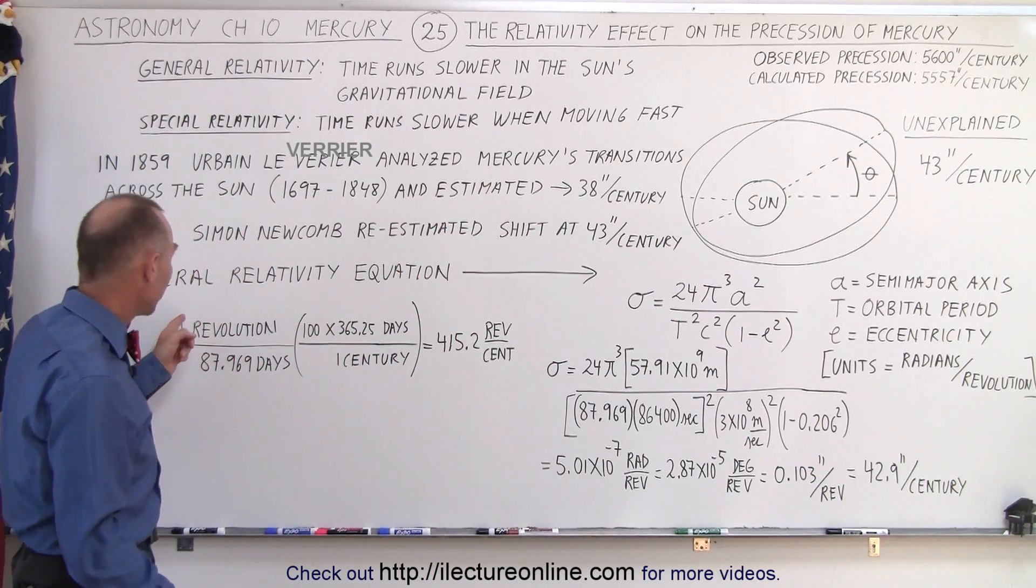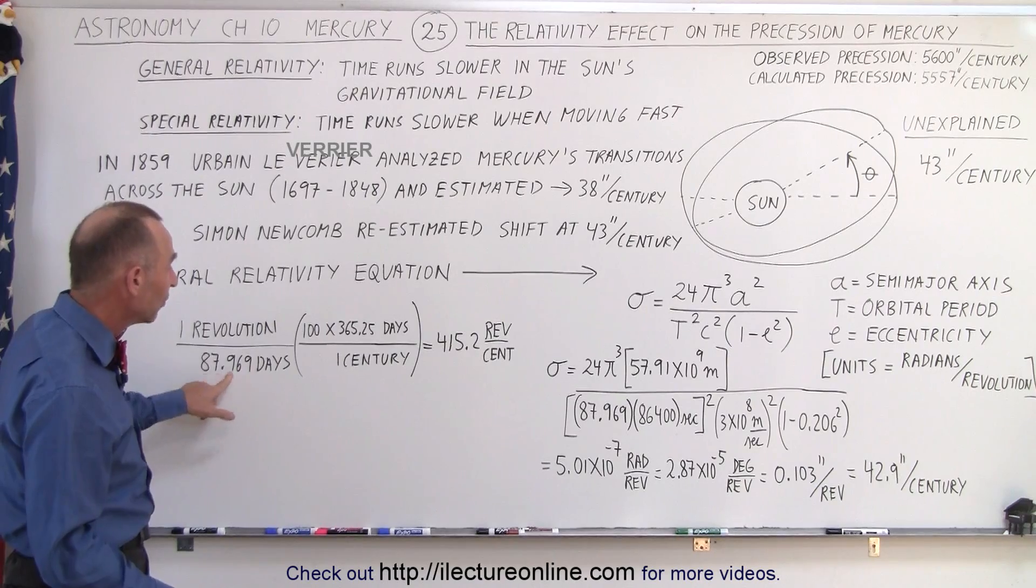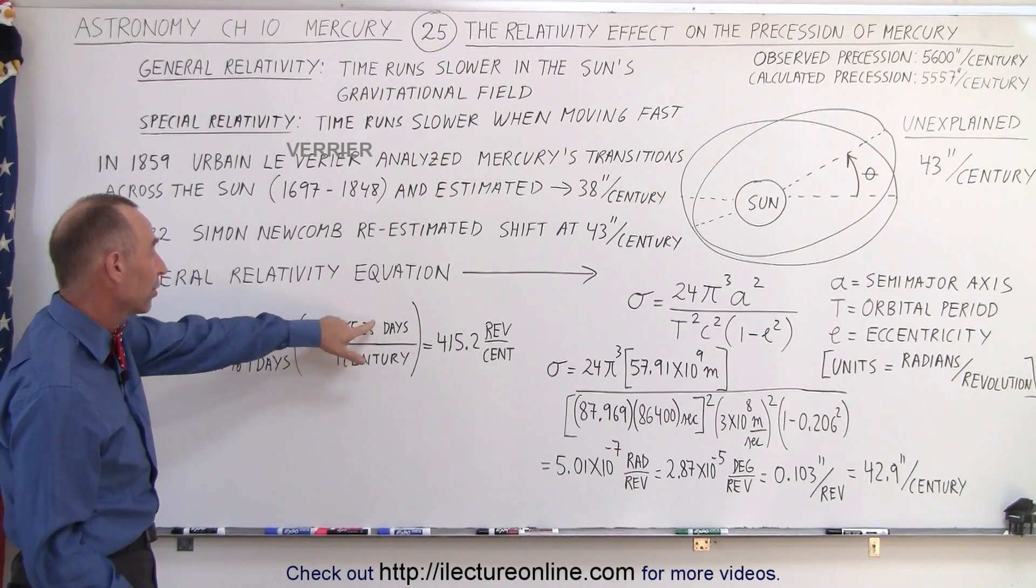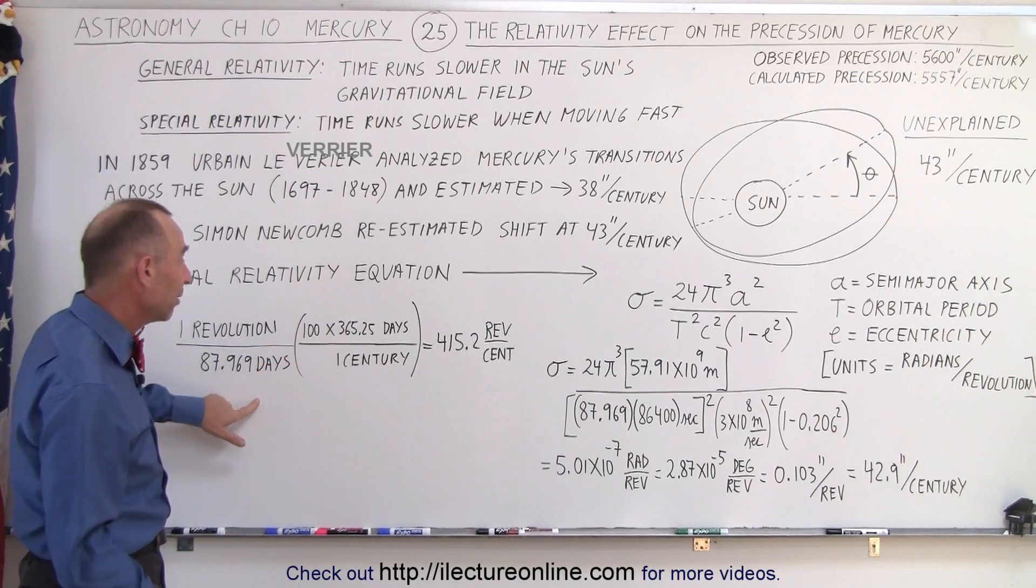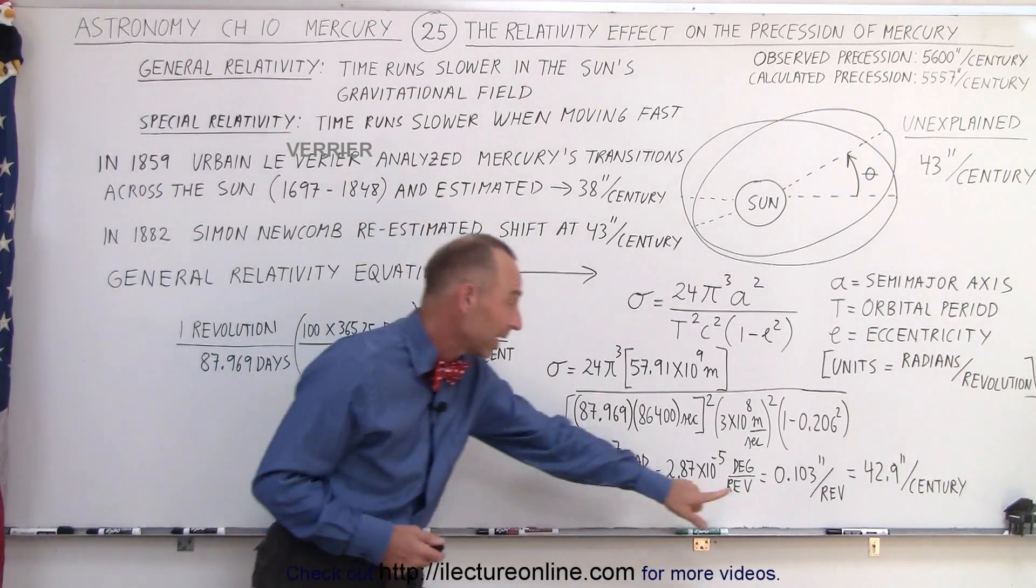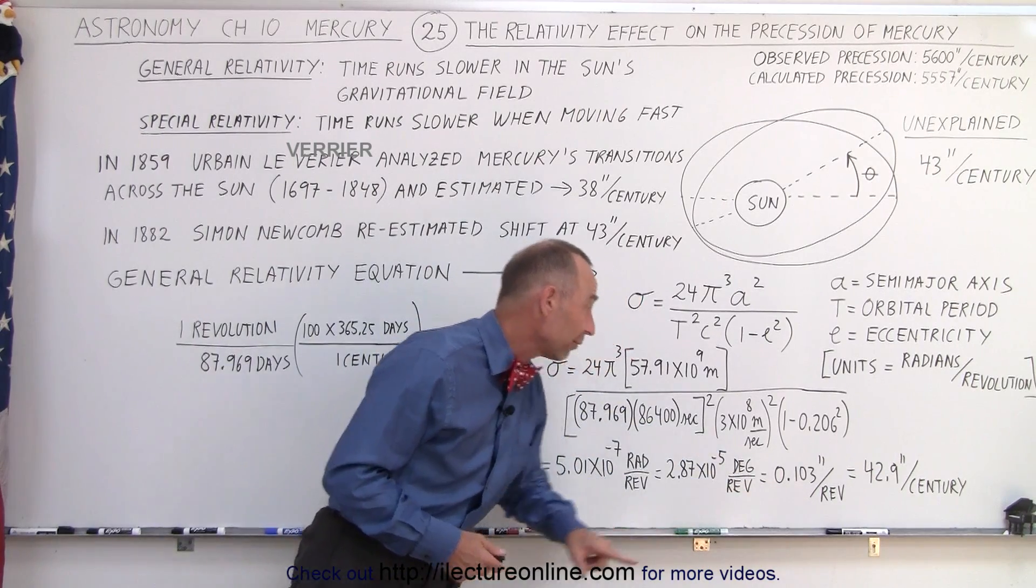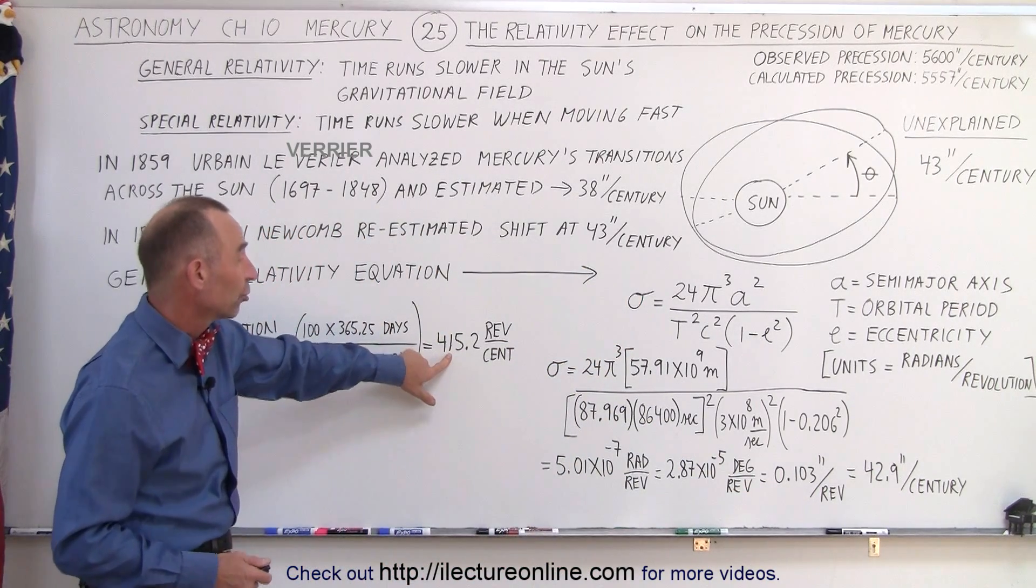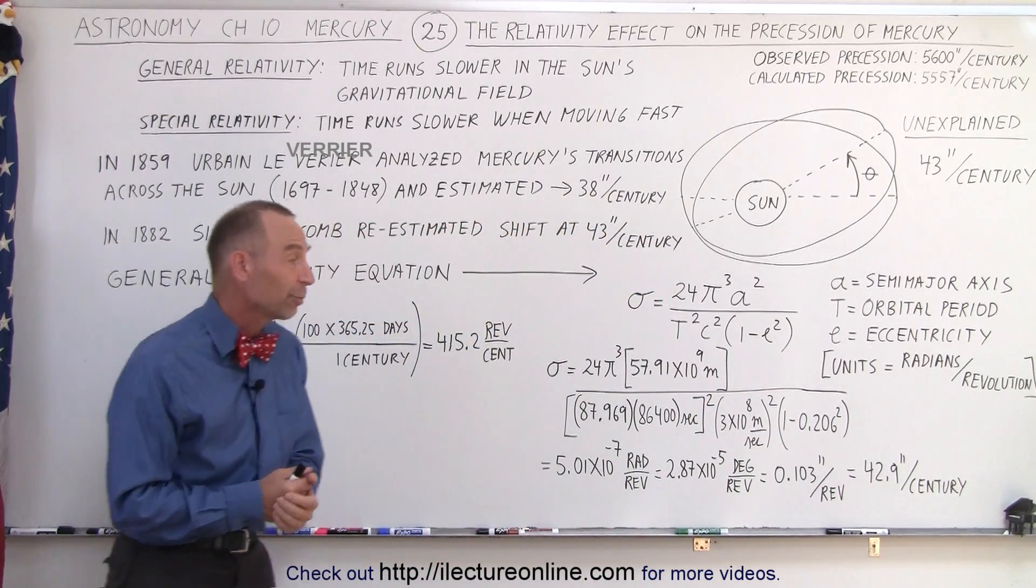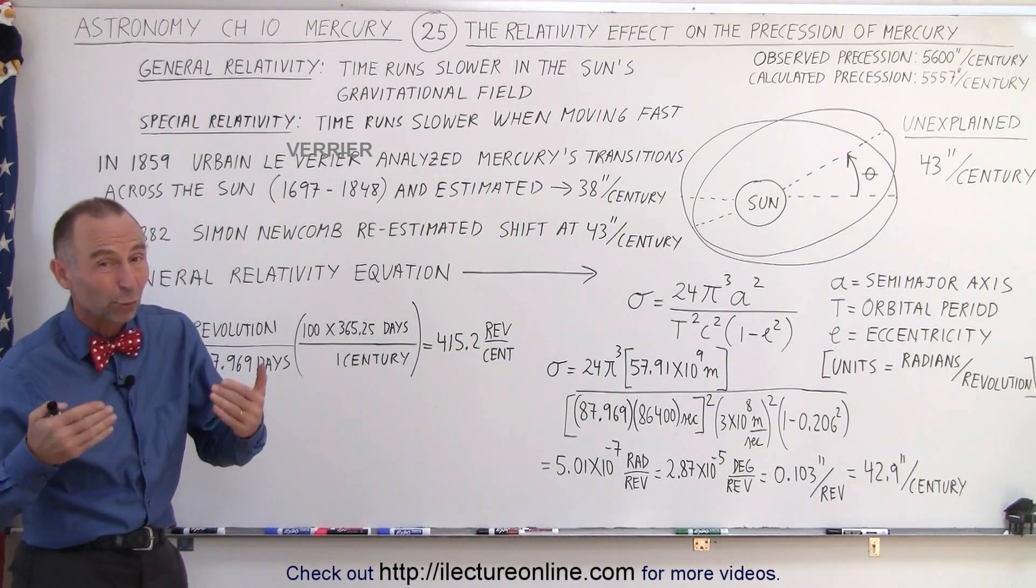Well here it is: one revolution every 88 days, 100 years times 365 and a quarter days per century, and that ends up being 415 revolutions. So you take this many arc seconds per revolution times this many revolutions per century and it does indeed add up to about 43 arc seconds per century.